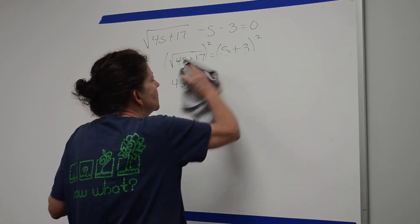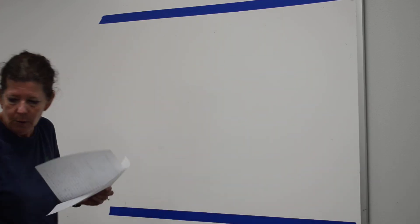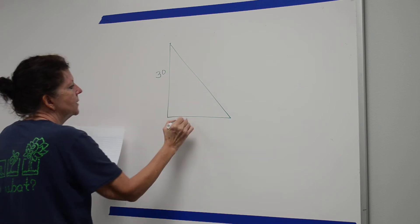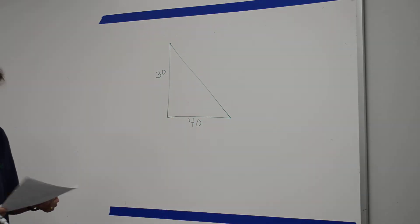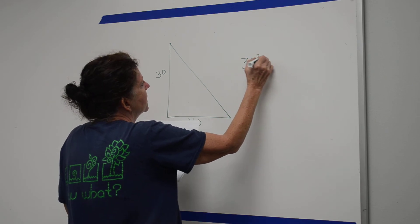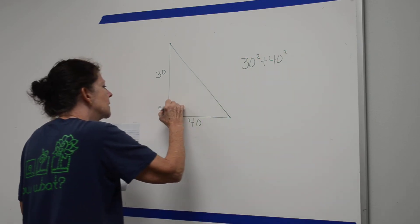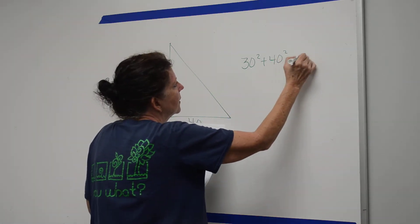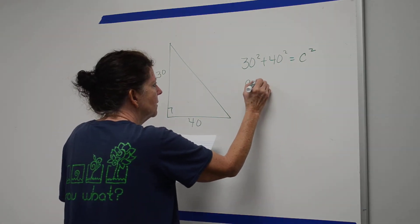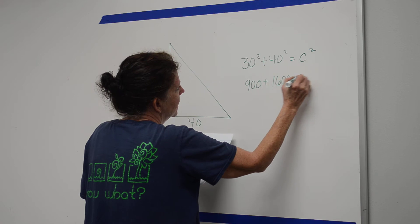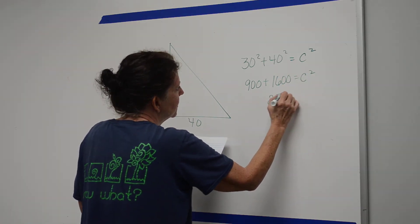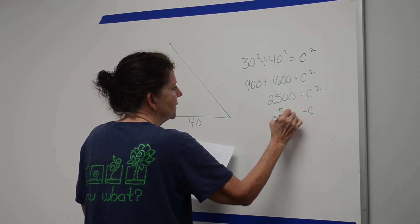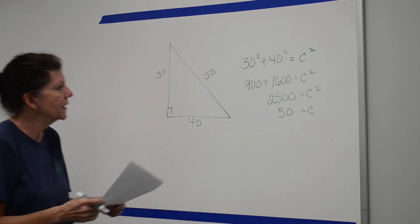Section 11.4 was the Pythagorean theorem — how to find unknown parts of a right triangle. For a triangle with legs 30 and 40: leg squared plus leg squared equals hypotenuse squared. So 30 squared plus 40 squared gives 900 plus 1600 equals C squared, or 2500 equals C squared. Taking the square root gives C equals 50, which is the hypotenuse.